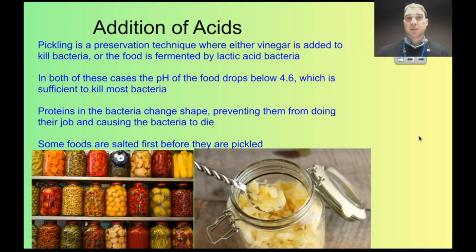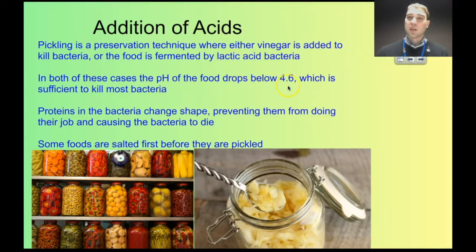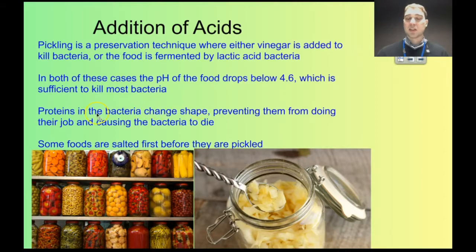Another way of preserving food is by adding acid. Pickling is where you add vinegar to food. Another method is fermenting the food with lactic acid bacteria, which produce enough lactic acid to make conditions too acidic for harmful bacteria to reproduce — so you're using bacteria to kill off bacteria. Dropping the pH below about 4.6 is the limit for most problematic bacteria. The acidic conditions change the shape of proteins inside the bacteria, stopping their chemical reactions and causing them to die.